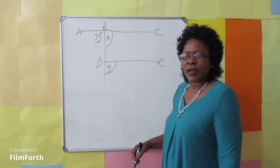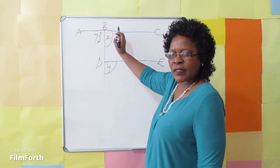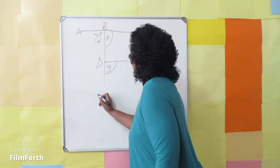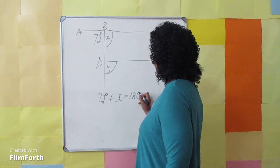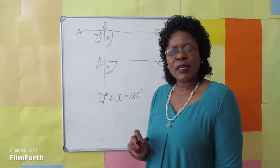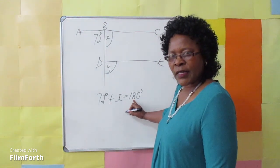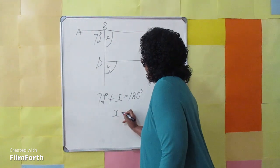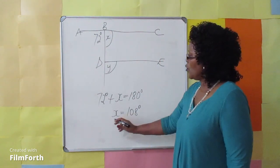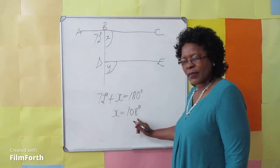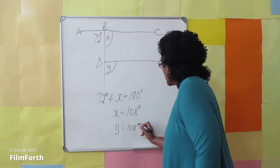The angle Y and angle X are corresponding angles. The sum of angles on a straight line is 180 degrees because they are adjacent angles. 72 degrees plus X is equal to 180 degrees. If we want to determine the value of X, 72 taken away from 180 degrees, X is equal to 108 degrees. The value of X is 108 degrees, and also the value of Y is 108 degrees. Therefore Y is equal to 108 degrees.